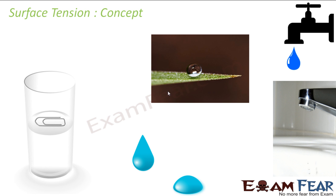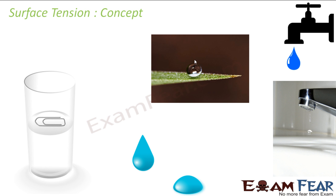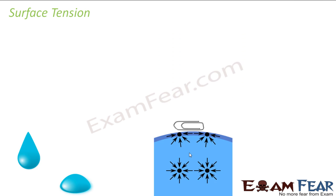Do we have an answer to this? Do we know why this happens? This happens because of surface tension. The pin floats, the water gets a spherical shape, the water drops at a particular shape — it is all because of surface tension.